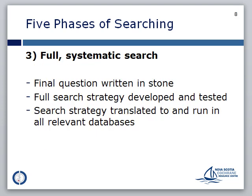The next stage of the search process involves the running of the full systematic search. This is done once the review question is completely finalized and the full search strategy has been developed and tested. At this point, the search strategy will be adapted to all the relevant databases and information sources that you have identified to search for the review.